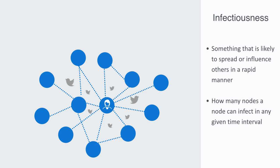A mosquito can only bite one other creature at a time. But a person can broadcast a message to possibly millions of other people at any given instant, thus enabling a much more rapid contagion rate.